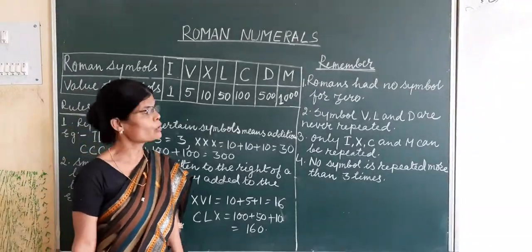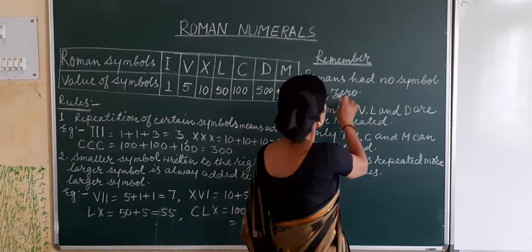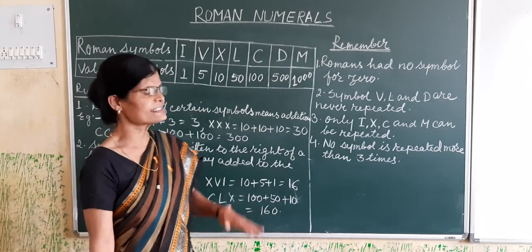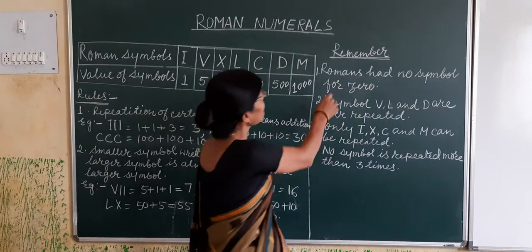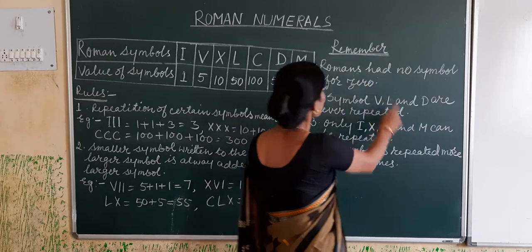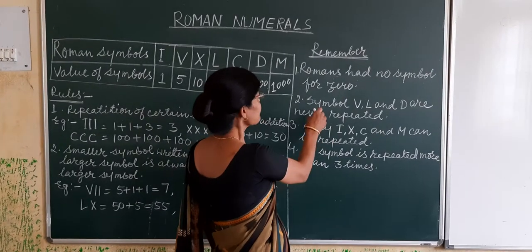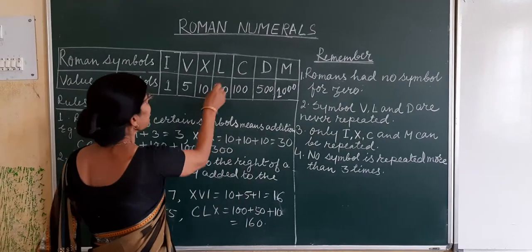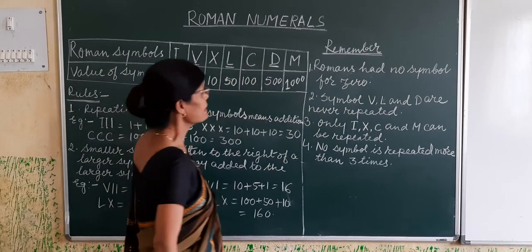These are called Roman numerals. Remember, Roman numerals have no symbol for zero. In the Indian or international system — the Hindu-Arabian number — we have 0, but in Roman numerals there is no symbol for zero. Another condition: the symbols V, L, and D are never repeated.